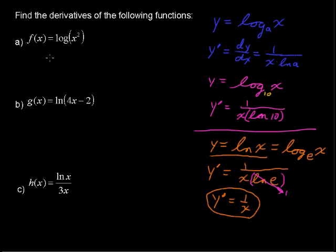So, starting off, find the derivatives of the following functions. f of x equals log of x squared. We're going to use the chain rule here, because we have more than just x, we have x squared. So we're going to take the derivative of the outside function, and then multiply by the derivative of the inside function. Also, we do not have a base shown here.